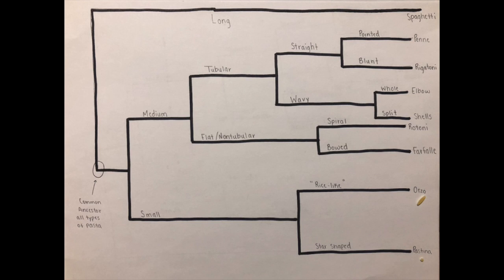If we go even farther back to our small-sized branch, we only see one more divergence based on the phenotypic trait of being either rice-like or star-shaped. These give orzo and pastina respectively.